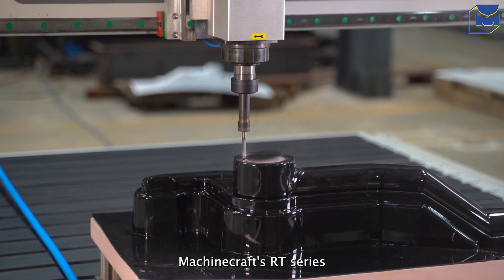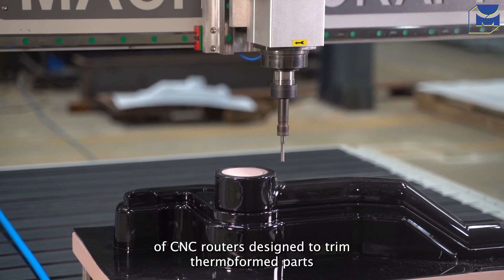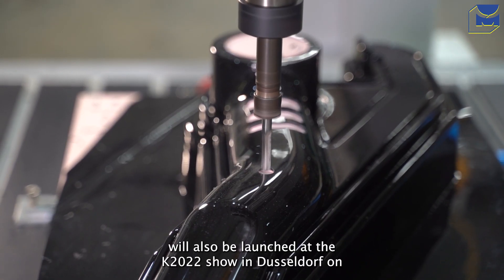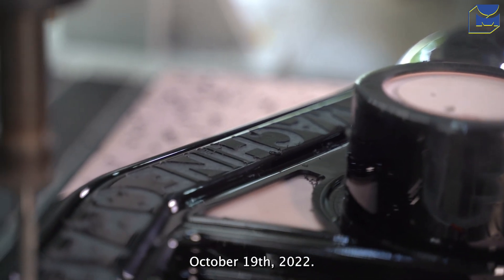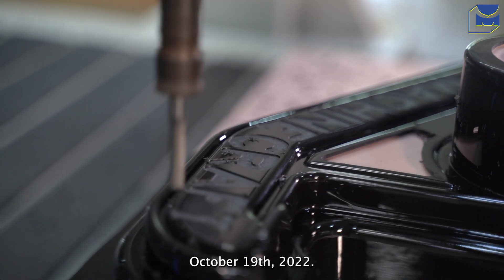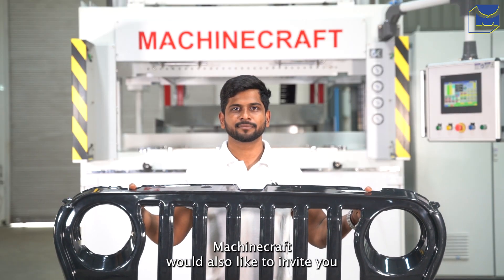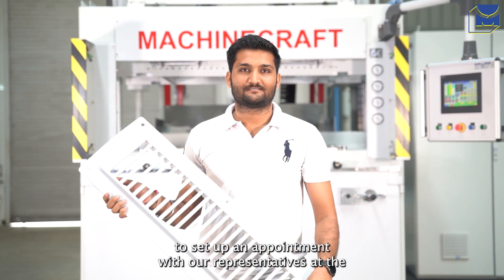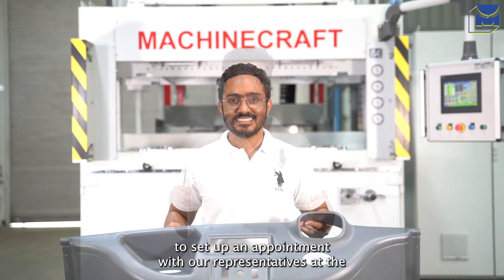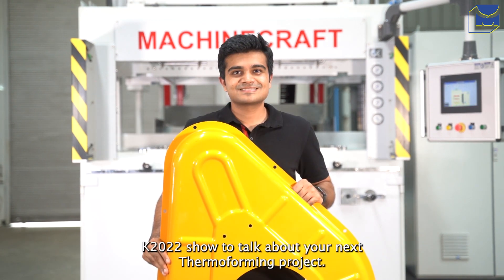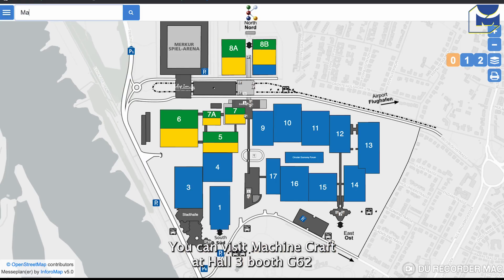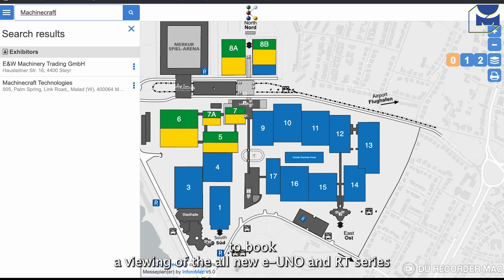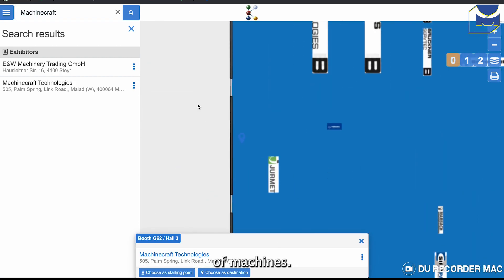Machinecraft's RT series of CNC routers designed to trim thermoformed parts will also be launched at the K2022 show in Düsseldorf on October 19, 2022. Machinecraft would like to invite you to set up an appointment with our representatives at the K2022 show to talk about your next thermoforming project. You can visit Machinecraft at Hall 3, Booth G62 to book a viewing of the all-new E-Uno and RT series of machines.